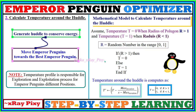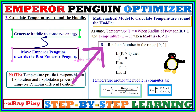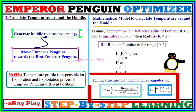The mathematical model to calculate the temperature around the huddle assumes that the temperature is zero when the radius of the polygon is greater than one, and the temperature is one when the radius of the polygon is less than one. Here, r is a normally distributed random number in the range zero to one. The equation used to calculate the temperature around the huddle includes the maximum number of iterations, x as the current iteration, and r as the radius of the polygon.